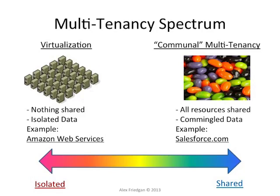There is an implementation spectrum. At one end of the spectrum is virtualization, where nothing is shared and all data is isolated. On the other end is communal multi-tenancy, where it's like four student roommates sharing two beds — you still have to wait in line even if you're late for class. Well-known examples on the virtualization end are web services for Amazon, and on the communal end is Salesforce.com.